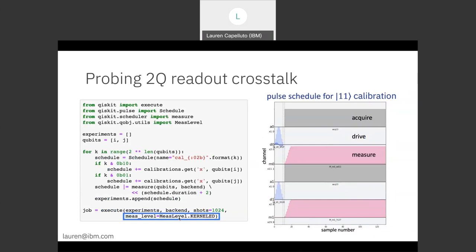So that means that when we get our measurement data back, we're going to get complex valued points rather than already classified data as we would normally get for quantum circuits.